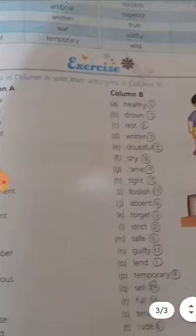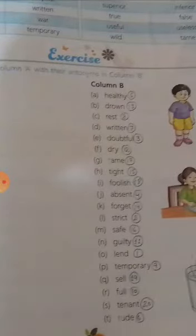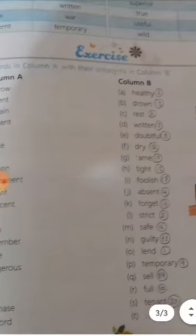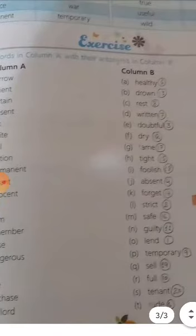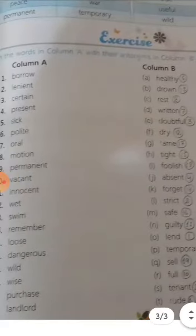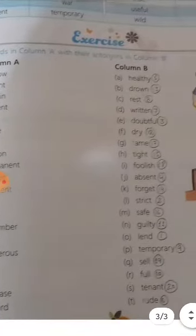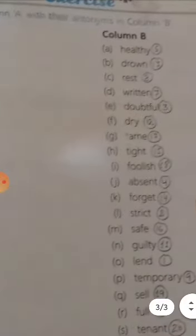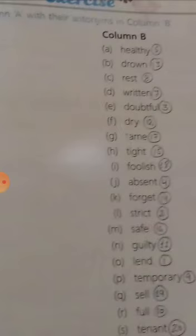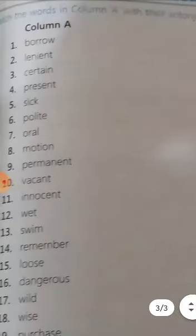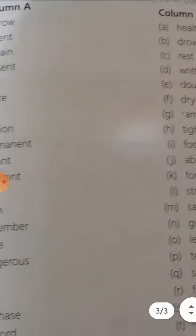First, borrow - the antonym is lend. Second, lenient - look, where is it? Lenient is strict. Third, certain - doubtful. Fourth, present - where is it? Present is absent. Fifth, sick - the antonym is healthy. Sixth, polite - what will happen? Rude.